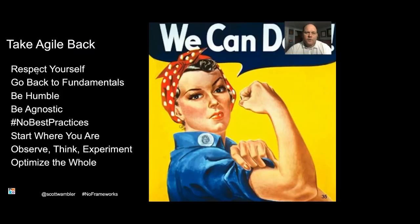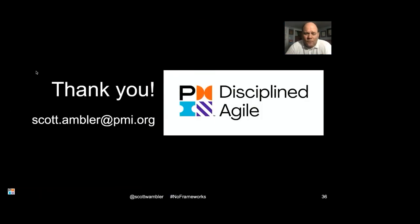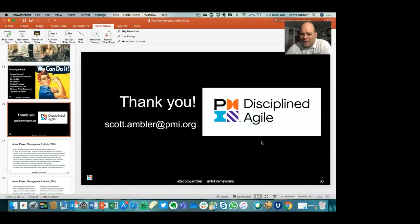So just to summarize: we can do this, we can take Agile back. We can get back to the heart of what Agile was all about — where it really was about owning your own process, learning how to get better, improving, experimenting, and doing better. Thank you very much, and I'm happy to go to questions.